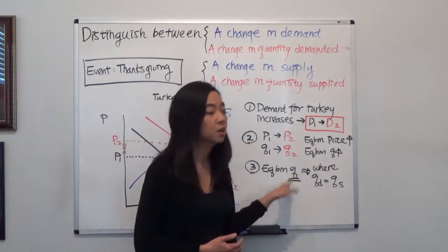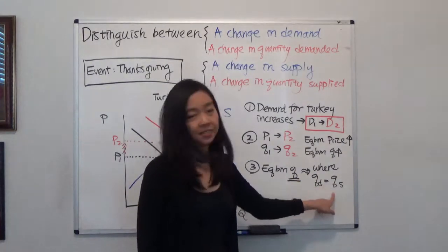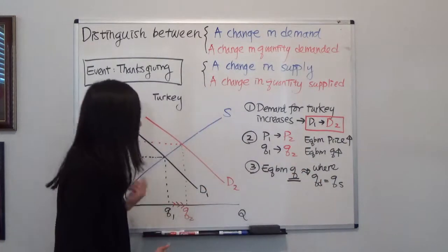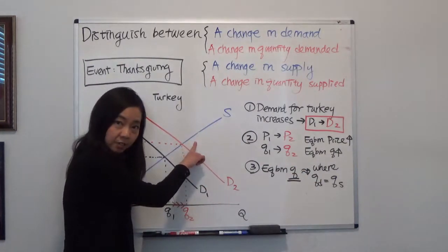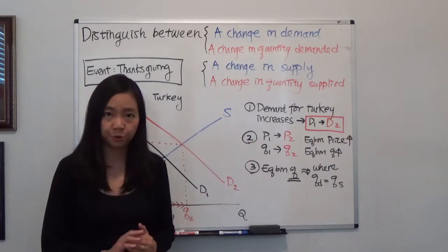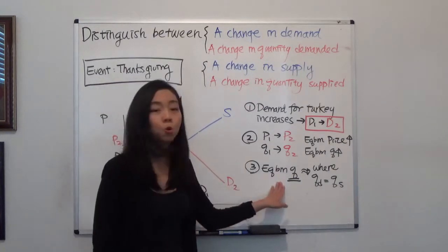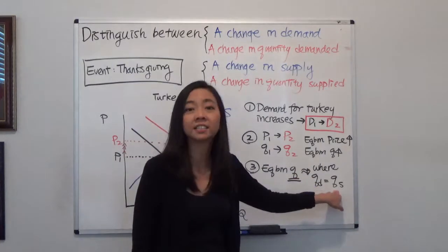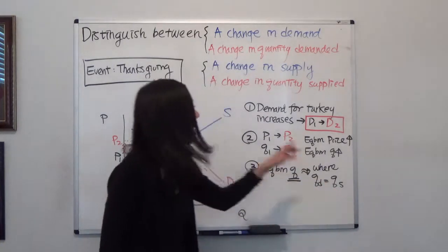That's a quantity where quantity demanded is equal to quantity supplied. So even though the supply did not change, you do observe a higher equilibrium quantity, meaning yes, the quantity supplied has gone up, but not the supply.